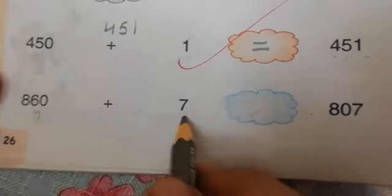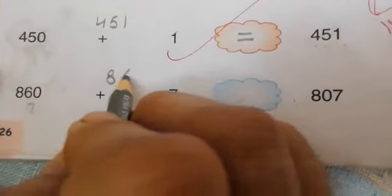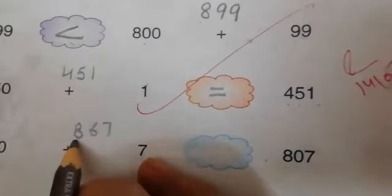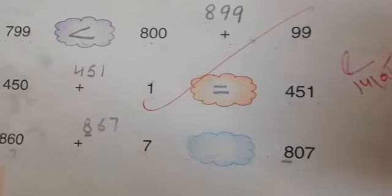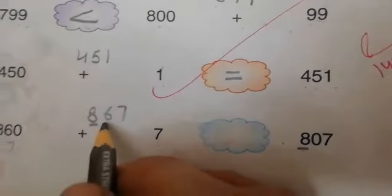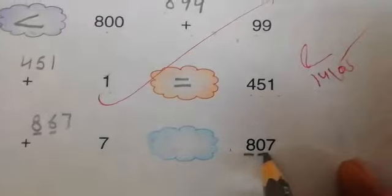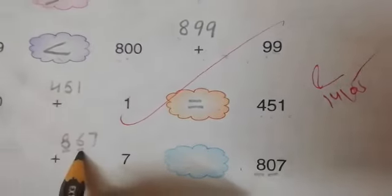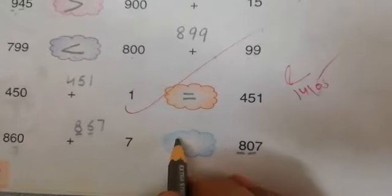860 plus 7 is 867, and 807. Now both hundreds are 8. What we have to check? We have to check tens. This is 0 tens and this is 6 tens. Which number is greater? 867.